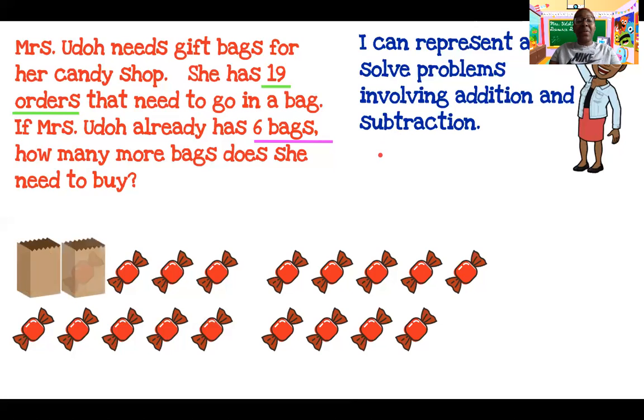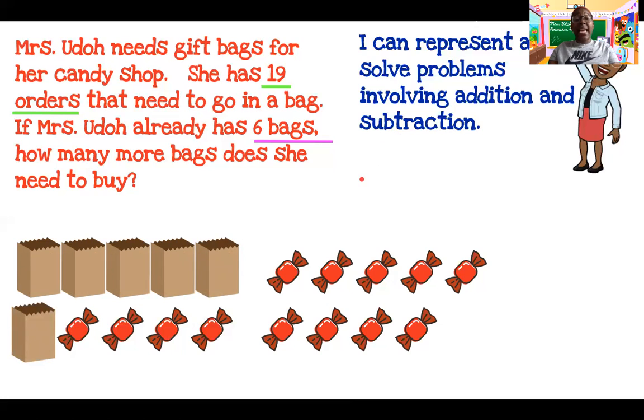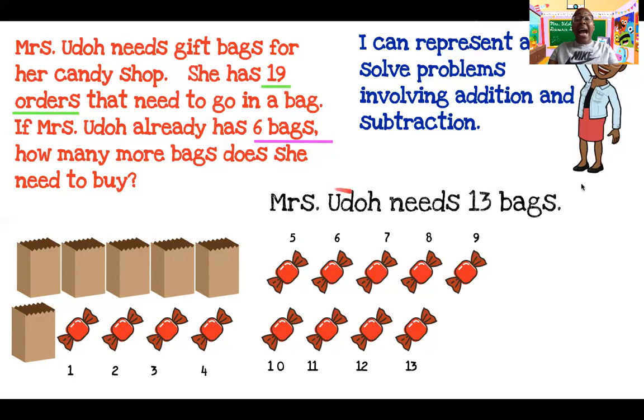One, two, three, four, five, six. Now we can count together to figure out how many more candies need to go in bags. Let's count them together. One, two, three, four, five, six, seven, eight, nine, 10, 11, 12, 13.